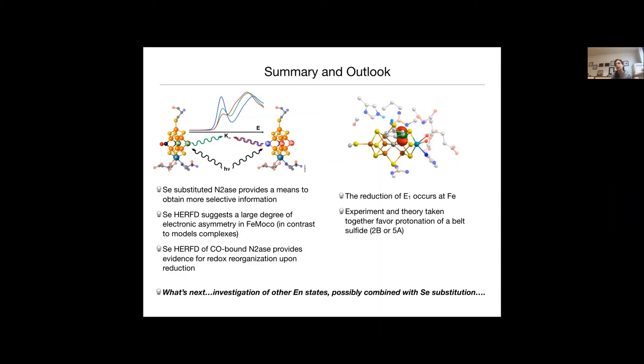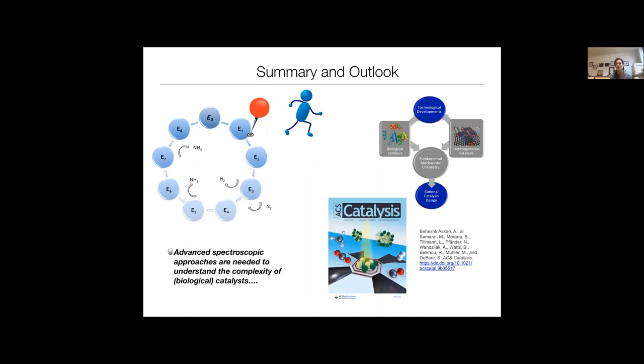So I have to again applaud all my group members for the tremendous efforts they've put into this. But I hope all in all, whether you're interested in biological catalysis or other kinds of catalysis, I hope I've shown you how much advanced spectroscopic approaches are needed to understand complexity really in every area of catalysis. And today I chose to focus on biological catalysis, but I want to just give out a shout out to one of my recent PhD students, Abbas Baheshti Asghari, who just last week got the cover of ACS Catalysis for some of his work on heterogeneous catalysis using in-situ STXM nanoreactors. So if you're interested in more heterogeneous, I wanted to advertise that.